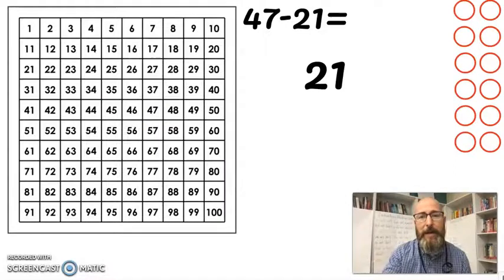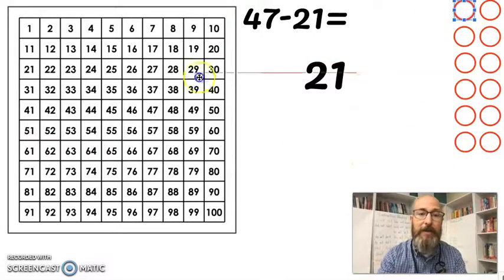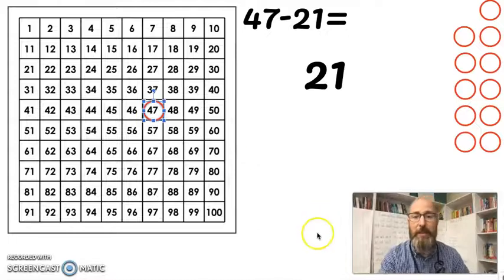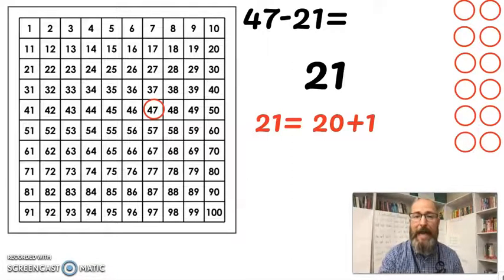When we subtract 21 we could just count backwards 21 times but that would take forever and nobody wants to do that. So what's a better way to do it? Well first we look at the number 21 and we know that the number 21 equals 20 plus 1. This is something we've been talking about at least in our class. So 21 equals 20 plus 1.